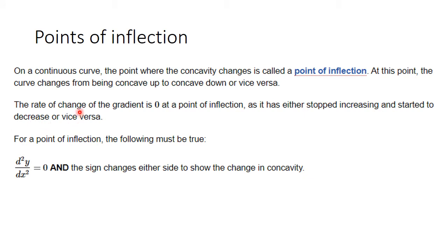It looks hard to understand, but when I show you a picture on the next slide it will be easier. For now, take down this note — it's very important. The second derivative equals zero and the sign changes at either side to show the change in concavity. If these two conditions happen, we have a point of inflection.